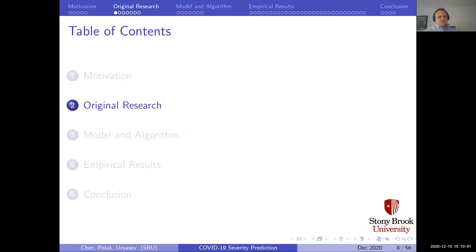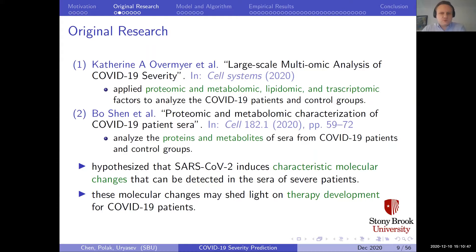We found some research already going in this direction. The two papers we found are very recent: a large-scale multi-omic analysis of COVID-19 severity, and a proteomic and metabolomic characterization of COVID-19 patients, published in Cell Systems and Cell respectively. The first paper analyzes proteomic, metabolomic, lipidomic, and transcriptomic factors from COVID-19 patients' blood and a control group. The second does the same using only proteins and metabolites. We have data from both papers and will try to do a better job with different models.